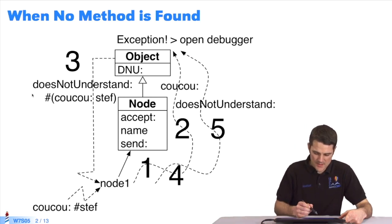Let's look at an example. We have the object Node1. We'll send this object the message cuckoo:stef.